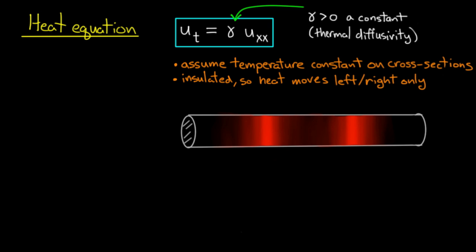First, we'll assume the rod is small enough that the temperature is constant on cross sections. This means if we take a little slice of the rod, everywhere on that slice the temperature is constant. This allows us to talk about temperature using only one spatial coordinate, the left-to-right position. We'll also assume the rod is insulated, so you lose no heat from the surface and only see heat move back and forth inside the rod.